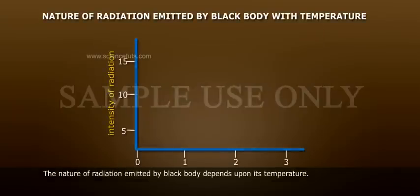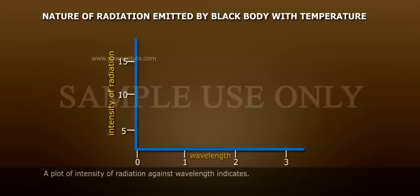The nature of radiation emitted by black body depends upon its temperature. A plot of intensity of radiation against wavelength indicates: